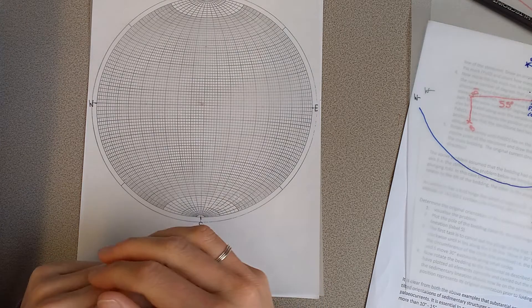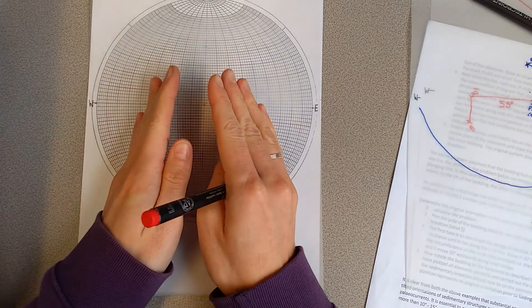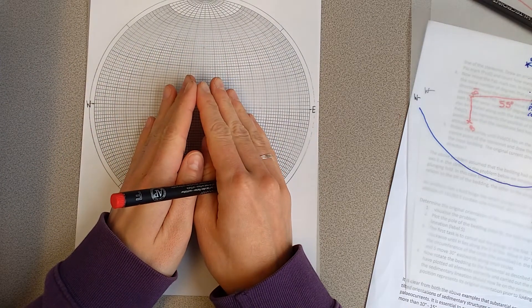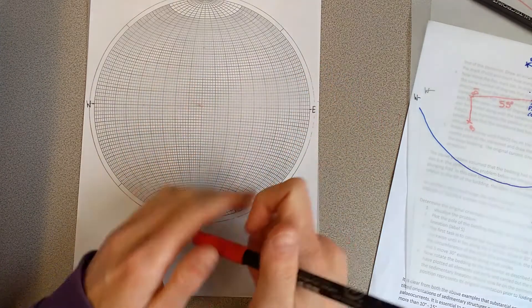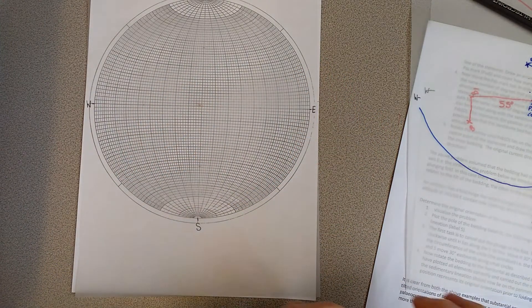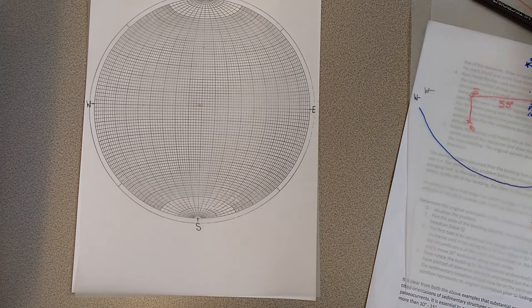Basically, what this is telling us is we've got some rocks that have been folded. They've then been overlaid by an unconformity, and then the whole thing has been tilted.